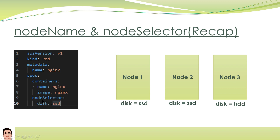This is the recap for node selector. We assign a label to each node - two nodes have the same label and node 3 has a different label. When we provide disk equals SSD, the kube API sends it to the scheduler since there's no hard restriction, and the kube scheduler decides. But if you have labels like low, medium, and high disk size and want to deploy only on medium or high - not low - node selector can't handle that complexity, so node affinity comes into the picture.